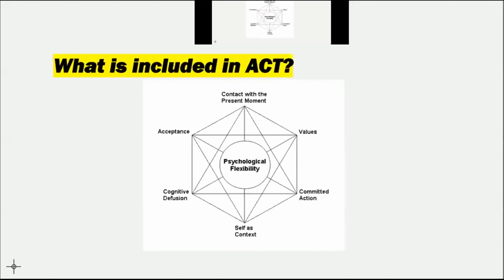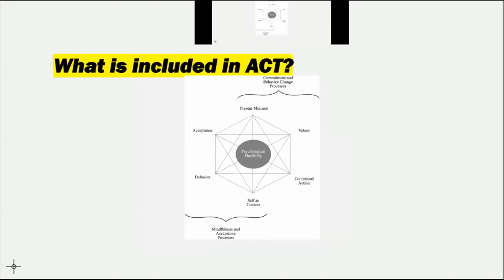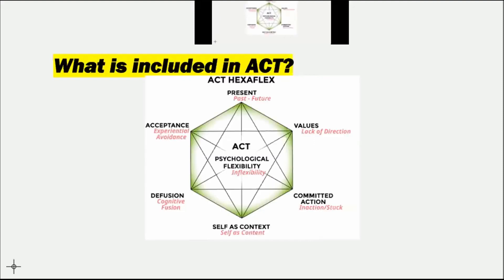The different lines on the Hexaflex represent that you may be able to jump across from one to the other. In the middle we have Psychological Flexibility. The top half of the Hexaflex can be referred to as more of the commitment and behavior change processes of ACT, and the bottom half is more of our mindfulness and acceptance-based procedures. There are inverse relationships to each of the different processes: if we're not engaging in present moment awareness, the individual is potentially ruminating on their past or their future. If somebody is unable to identify their values, they potentially have a lack of direction of where they want to go in life.